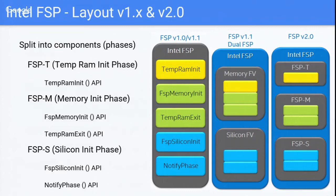The second phase is FSP MemoryInit—the memory initialization bring-up phase where DRAM training, detection, and initialization happen. The primary goal is to bring up memory. It also handles programming before locking certain registers, determining which features to enable, and how memory layout needs to happen. The exit of that phase means memory is up and running, and the memory status is reported out through HOBs to the bootloader.